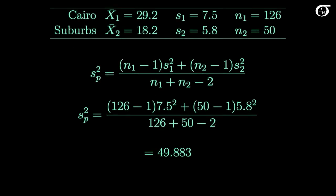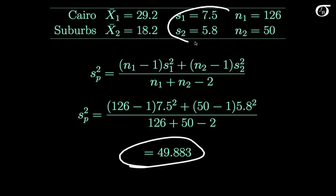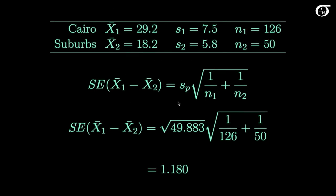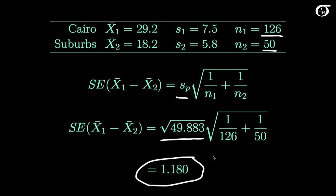Let's go back to the Cairo and suburb police officers. We have a summary of this information — you might want to pause and review where these calculations come from. We compute our pooled sample variance, which is a weighted average of the sample variances, i.e., a weighted average of the squares of the sample standard deviations. We then take sp as the square root of that pooled variance, and multiply by the square root of (1/n1 + 1/n2), giving a standard error of 1.180.